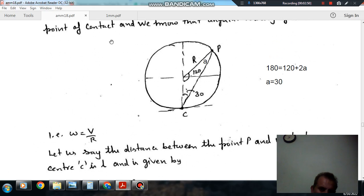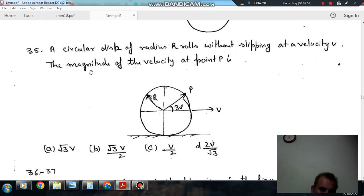So answer to question number 35 is √3V. Velocity of this point is √3V. Then the velocity of center point is V. So answer is option A.